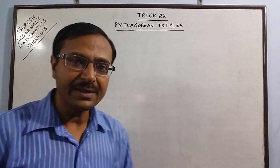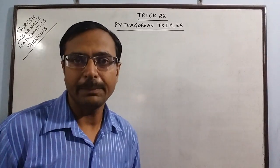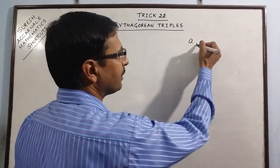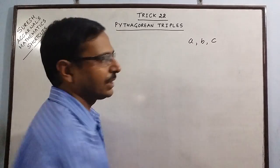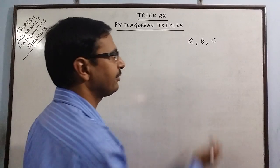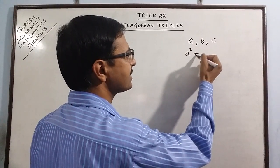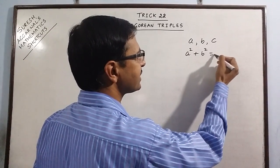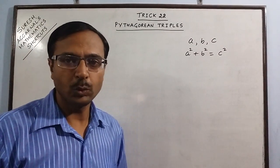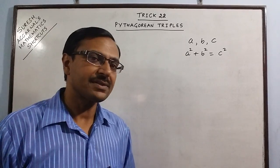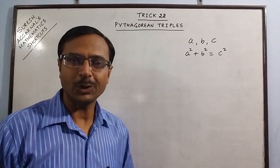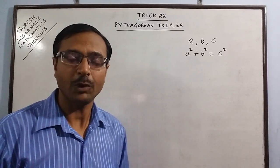So first of all let us first know what a Pythagorean triplet is. A triplet of numbers A, B, C is called a Pythagorean triplet if A square plus B square gives us C square. If the sum of squares of two numbers gives us the square of another number then the three numbers are said to form a Pythagorean triplet.